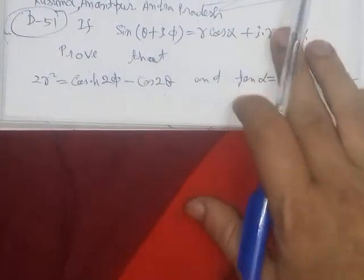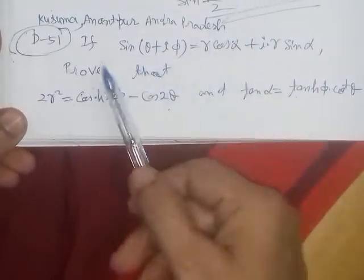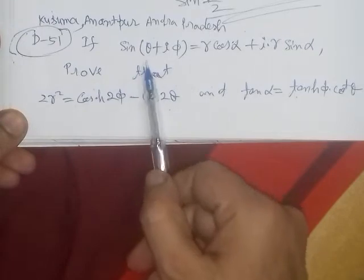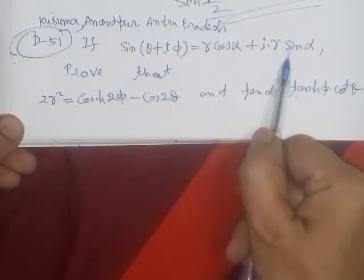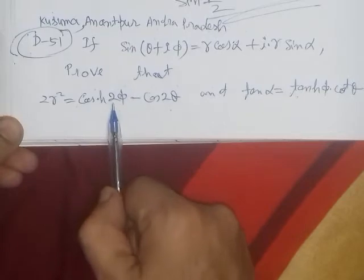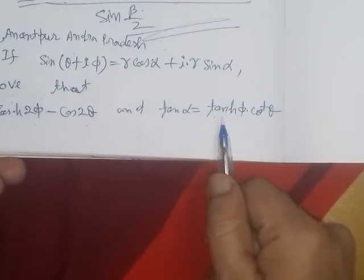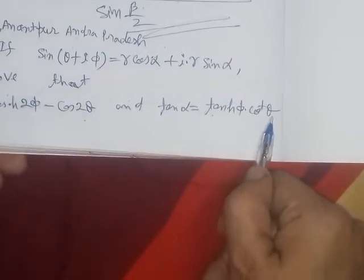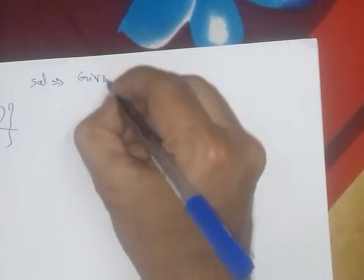Bismillah. On the demand of Kushma, Anantapur, Andhra Pradesh — a problem from metric: given that sin(θ + iφ) is equal to r·cos α + i·r·sin α, prove that 2r² equals cosh(2φ) minus cos(2θ), and tan α equals tanh(φ)·cot θ. We will now write the solution.